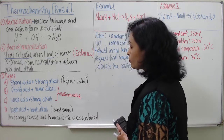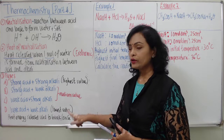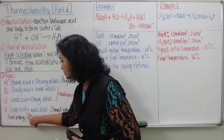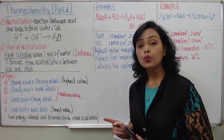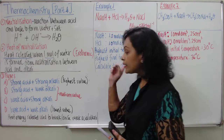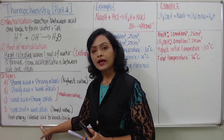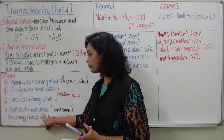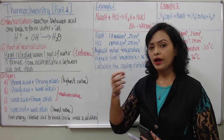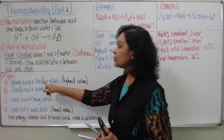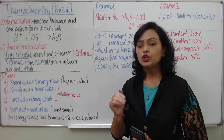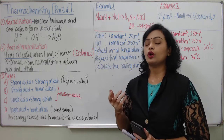The combination of strong acid and strong alkali produces the highest value of heat of neutralization, while weak acid and weak alkali combination produces the lowest value. The reason is that the heat energy released during neutralization for weak acid and weak alkali is used to ionize or produce further hydrogen or hydroxide ions. Strong alkaline and strong acid produce a high amount of hydrogen and hydroxide ions, so the majority of heat energy produced is not used for anything else.